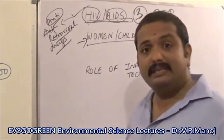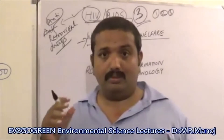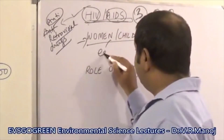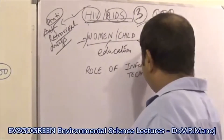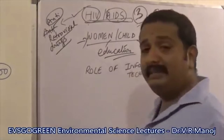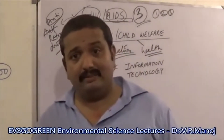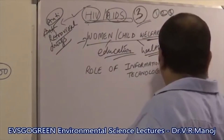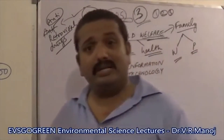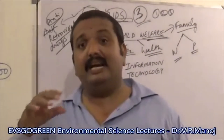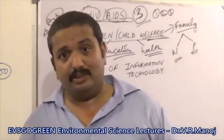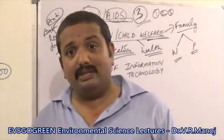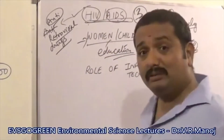Another important aspect is the women and child welfare programs present in our country and abroad. To remember them easily, there are only two aspects: education and health. These are the two major issues prominent for both women and child welfare. Family welfare and family planning programs are also very important in deciding the population, the socioeconomic status, and the democratic status — all of which depend on the family planning programs that a particular government has.